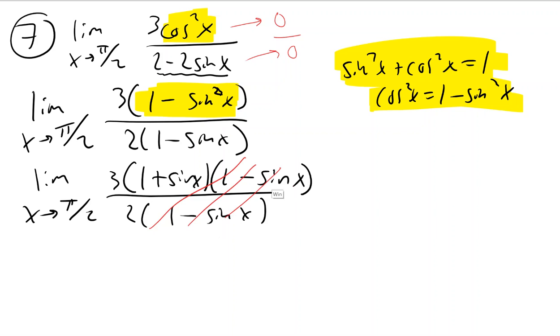So then these cancel. And as soon as those cancel, you should start to feel like you're almost done. Plug it back in and see what you get. You get 3 times 1 plus the sine of pi over 2. So it looks like 3 should be your answer.